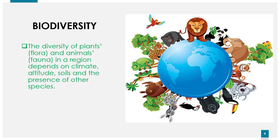In terms of biodiversity, plants are called flora and animals are called fauna. Which plants and animals are present in a region depends on the climate, altitude, height on earth, and soil conditions.